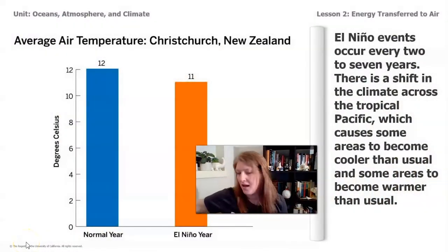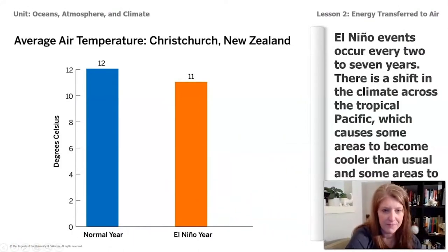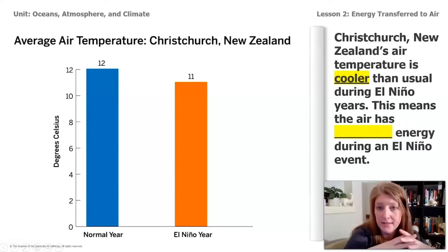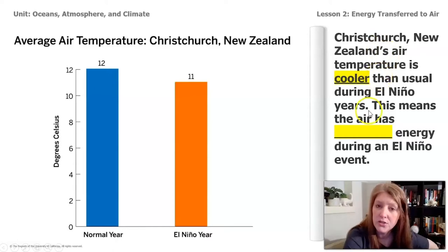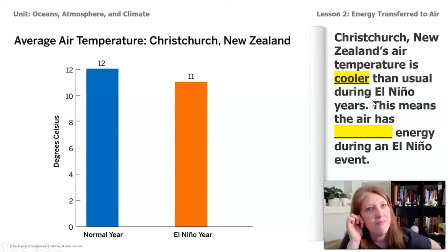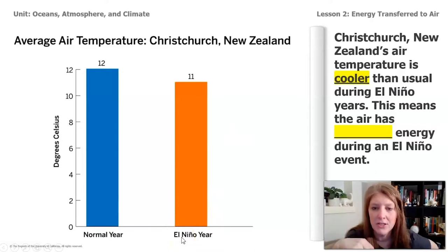Now that we have an understanding of what this graph is showing us, let's talk a little bit about what that means for the energy. If we're looking at the data and trying to understand how the energy in the air might change as the temperature changes — on the right side of the screen it says Christchurch, New Zealand's air temperature is cooler than usual during El Niño years. This means that the air has blank energy during an El Niño event. The temperature is going down during El Niño, so is the energy going up or down?